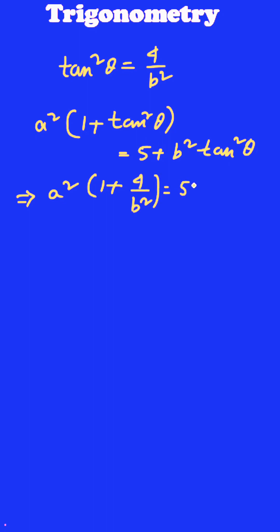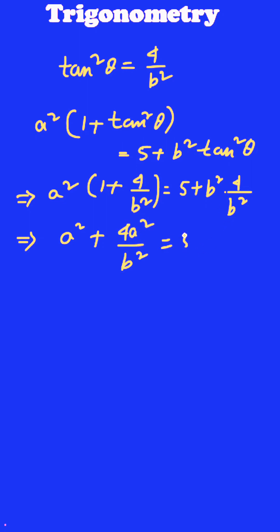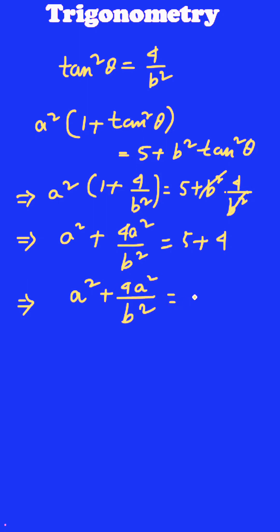Now, put the value: s²(1 + 4/b²) equals 5 + b²·(4/b²). This gives s² + 4s²/b² equal to 5 + 4, that is 9, with b² cancelling out. So s²b² + 4s² equal to 9b².